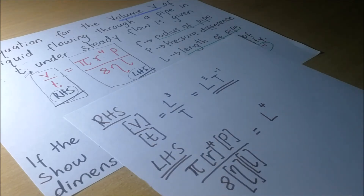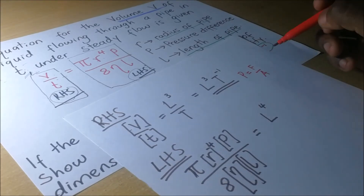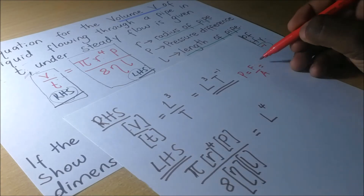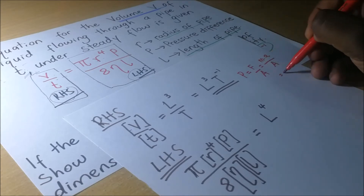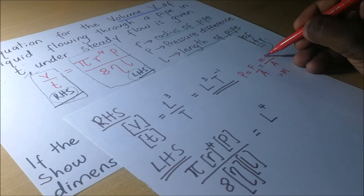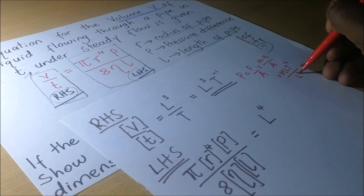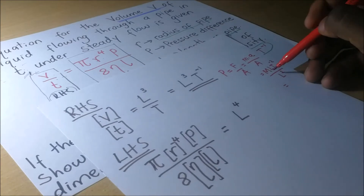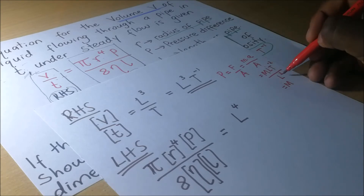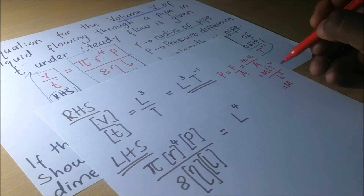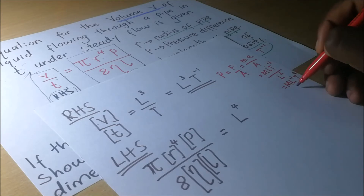Let's do some side work for that. We know that pressure is force over area. Force is mass times acceleration, divided by area. Mass is capital M, acceleration is L T to the power negative 2, divided by area which is L squared. So the dimensions for pressure are M times L to the power 1 over L squared, giving L to the power negative 1, times T to the power negative 2. These are the dimensions of pressure.